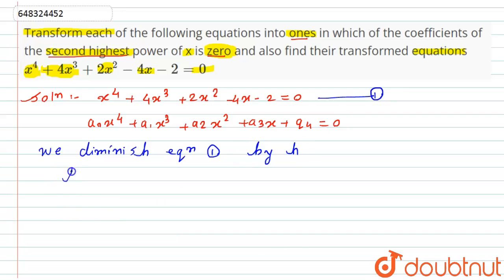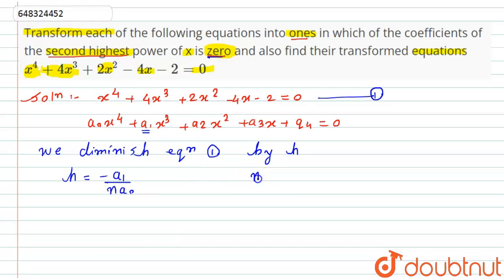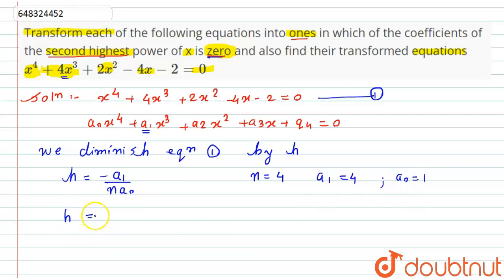What will be the value of h? Since the second highest power coefficient should be 0, we need the term a₁. The value of h is: h = −a₁ / (n · a₀), where n is the highest order of the equation, which is 4. On comparing, a₁ = 4 and a₀ = 1. Substituting, h = −4 / (4 × 1) = −1.